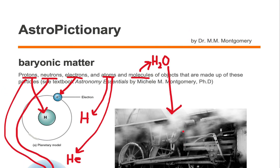Baryonic matter is protons, neutrons, electrons, atoms, and molecules — things that you can touch, that make up objects. They are examples of baryonic matter.